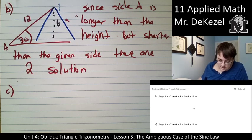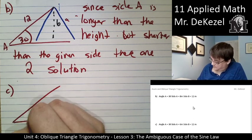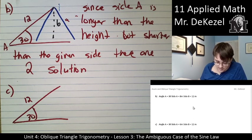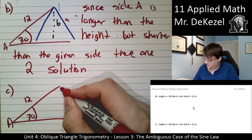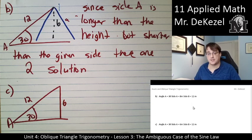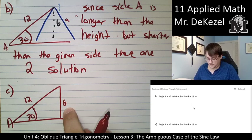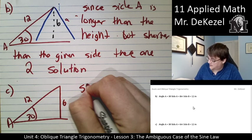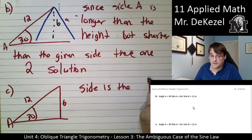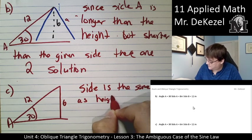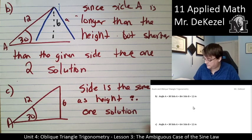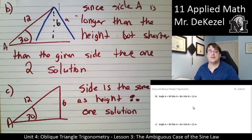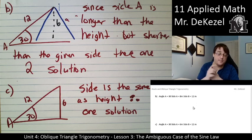Part C: same setup, 30 degrees and 12 meters. This time side A is given as 6 meters. We know the height is 6 meters. If the given side is exactly the same as the height, there is exactly one solution. The side is the same as the height, therefore one solution to the problem.